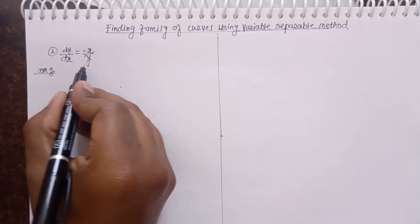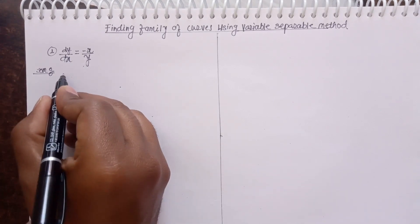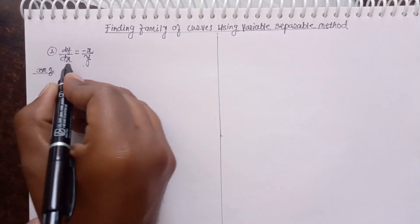Example here. Variable separable we can easily separate. Therefore, here you can select y and dx.